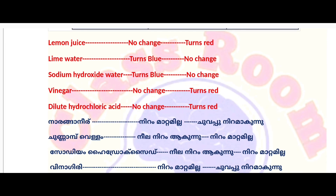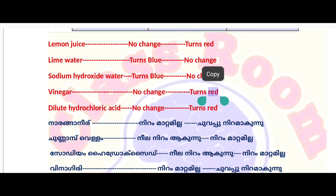Lime water is an alkaline substance. Red litmus paper turns blue. Blue litmus paper shows no color change.